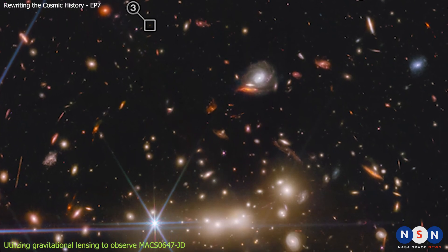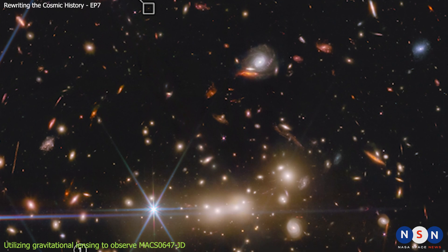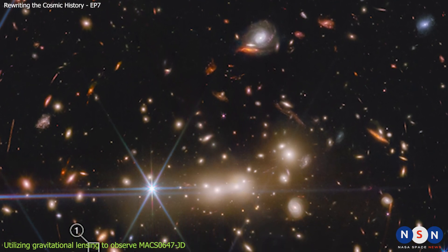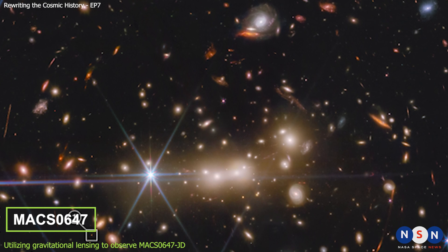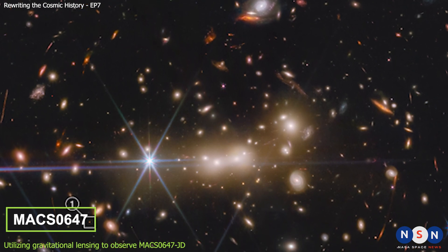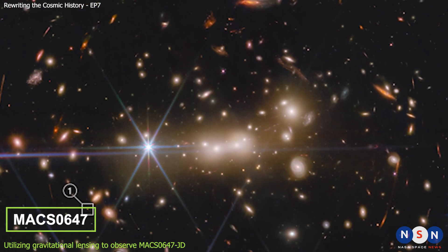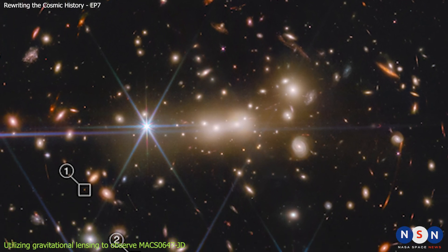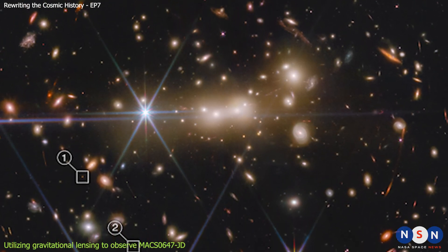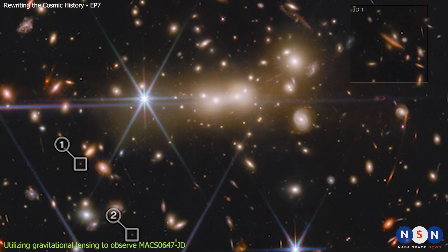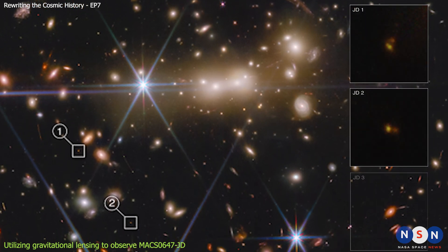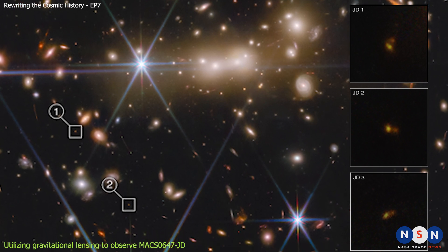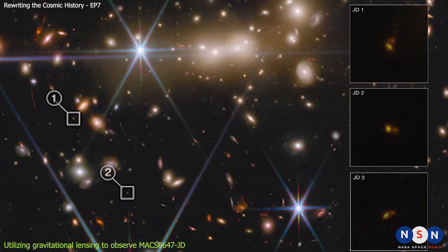Astronomers used Webb's near-infrared camera, NIRCAM, to observe MAX JD. They used a cluster of galaxies called MAX 0647 as a gravitational lens to magnify and multiply the image of MAX JD. The cluster's gravity bent and amplified the light from the galaxy, creating three images of it in different locations, marked as JD1, JD2, and JD3 in the image.